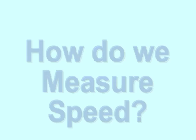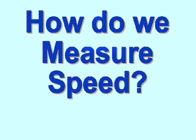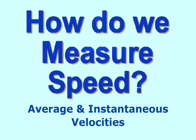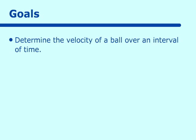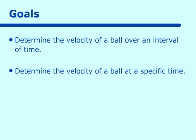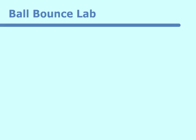This lesson is on how do we measure speed. It is your introduction to differential calculus. In order to do this introduction, we have to look at what is called average velocities and instantaneous velocities. The way we're going to look at our average and instantaneous velocities is through a ball bounce lab. We're going to determine the velocity of a ball over an interval of time, and then determine the velocity of the ball at a specific time. So let's go to our ball bounce lab.